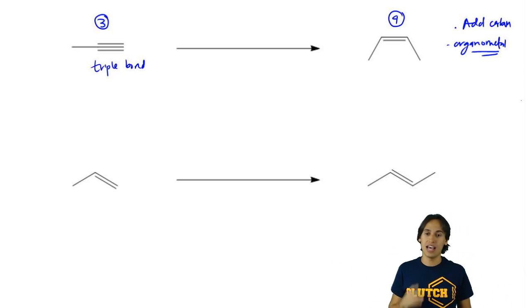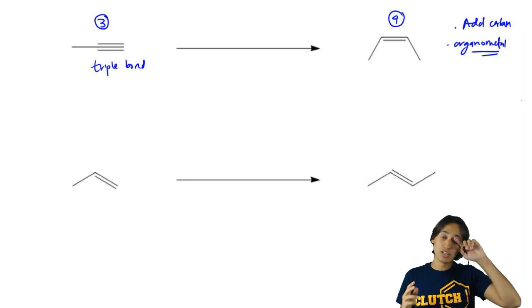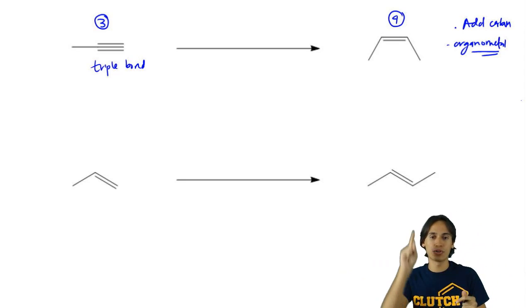So basically what you should be thinking is how many carbons do I need to add to the triple bond to make four? And then what do I need to do to that triple bond after so it looks like a double bond that looks like that?